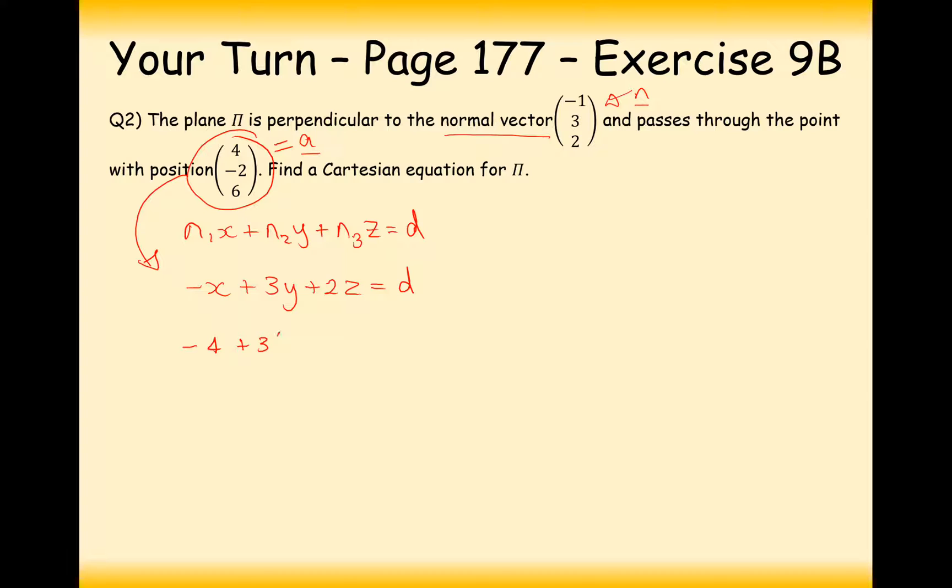So, subbing this in, minus 4, add 3 times minus 2, add 2 times 6, equals d. Simplifying this, we get minus 4, minus 6, plus 12, equals d. That's minus 10, add 12, that's 2. Now, d here can be a negative number, so if you ever get a negative d, then don't worry, that is acceptable. So, minus x plus 3y plus 2z, in this case, is going to equal 2. And, that there is the equation of the plane that is perpendicular to this vector here, and that will go through this coordinate here.